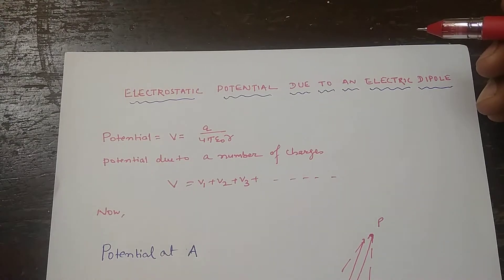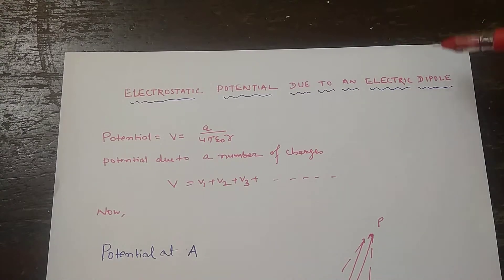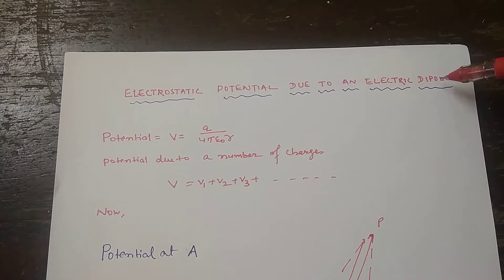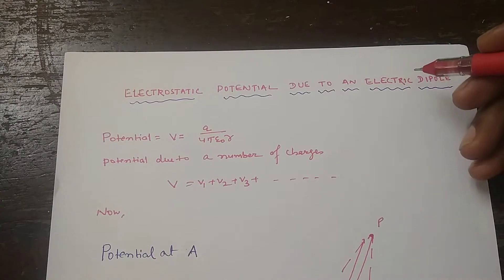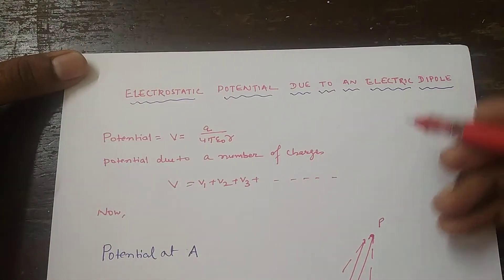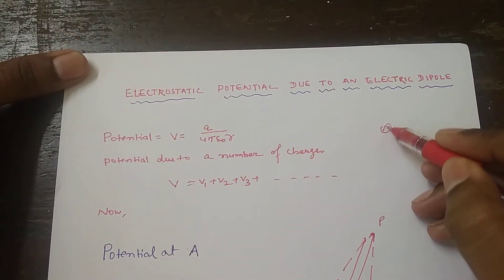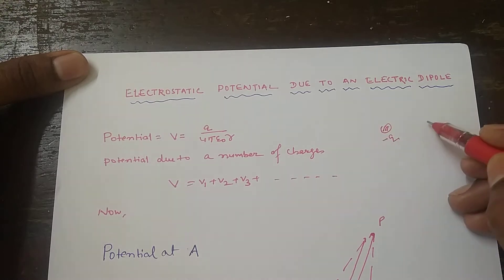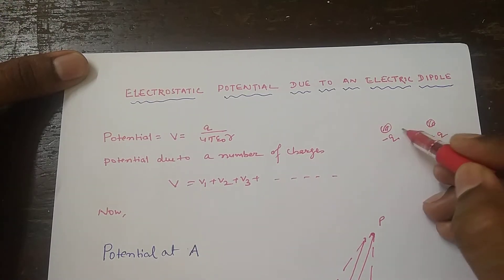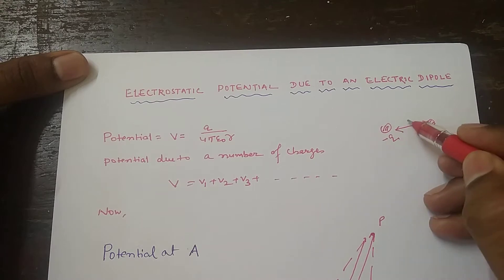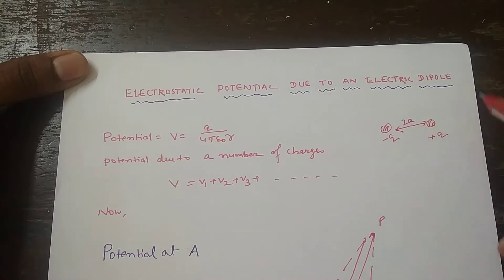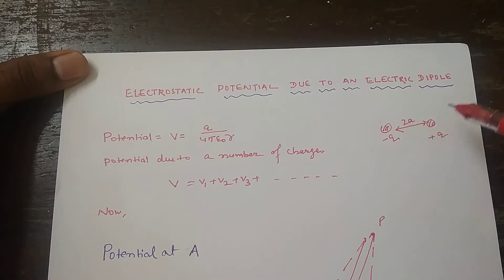For a quick revision: an electric dipole consists of two opposite charges separated by a very small distance. Here, let us suppose this one is minus Q and this one is plus Q, with a separation of 2A. This combination is known as an electric dipole.